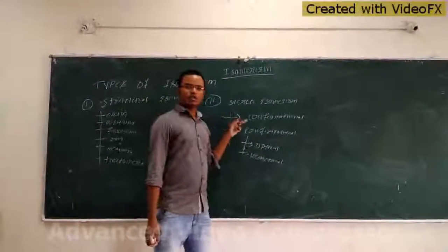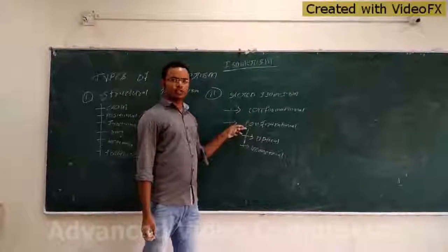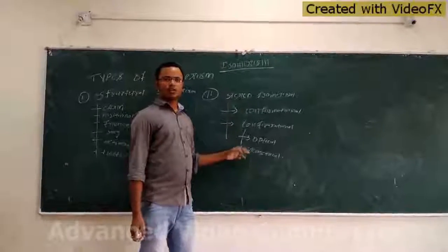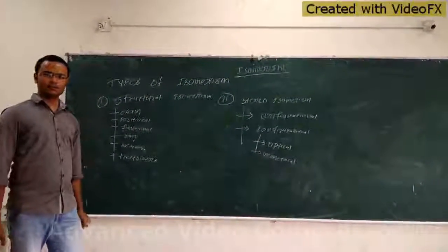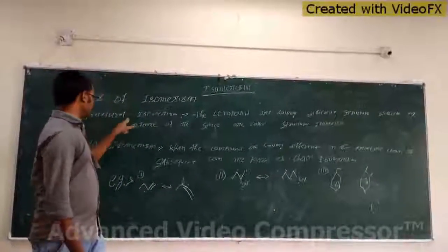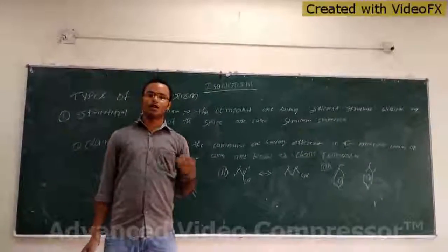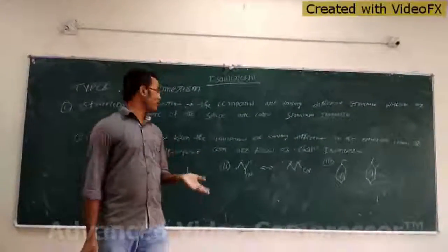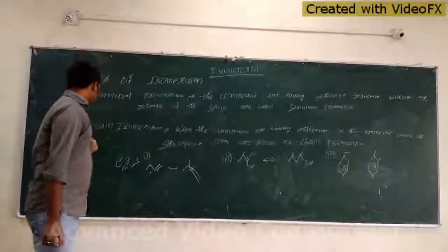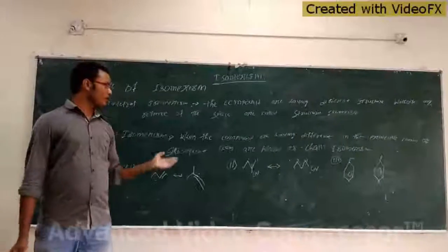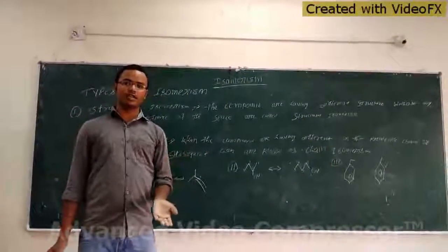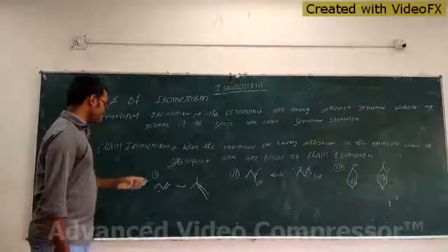And the stereoisomers are two types: conformational isomer and configurational isomer. Conformational isomers are also two types: optical isomer and geometrical isomer. So compounds having different structures without reference to stereochemistry are called structural isomers. Now we come to the first part of structural isomers: chain isomers. When compounds differ in their principal chain and branched chain, they are called chain isomers.